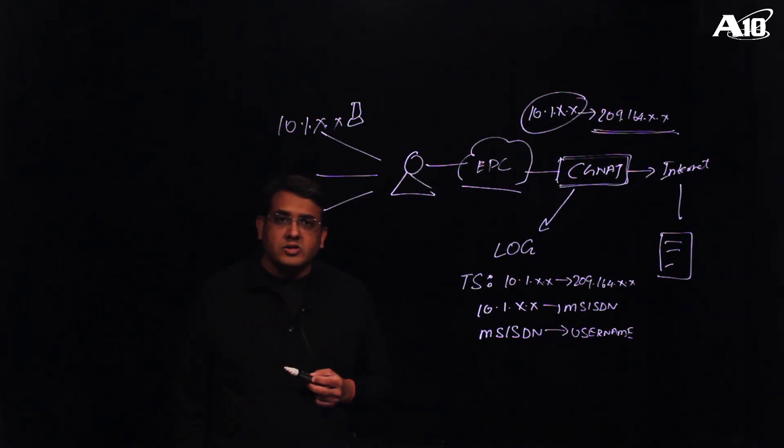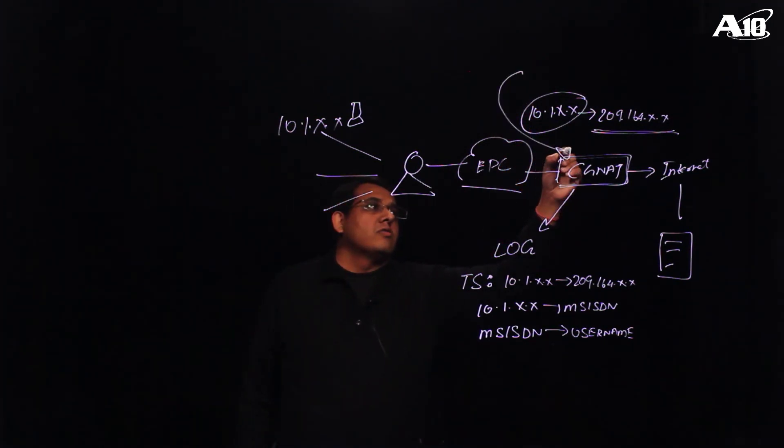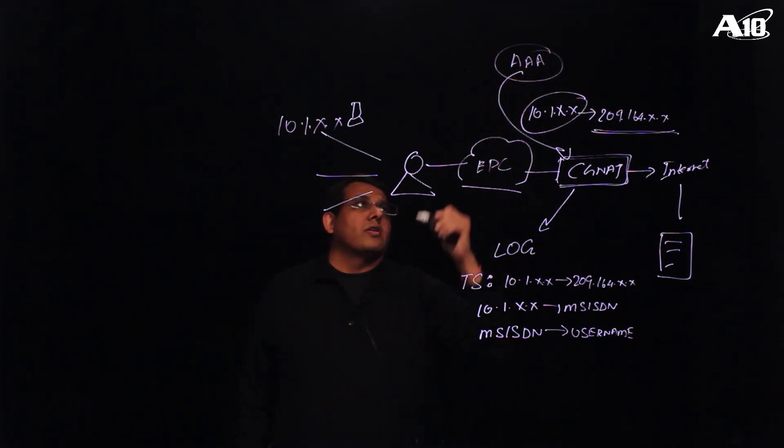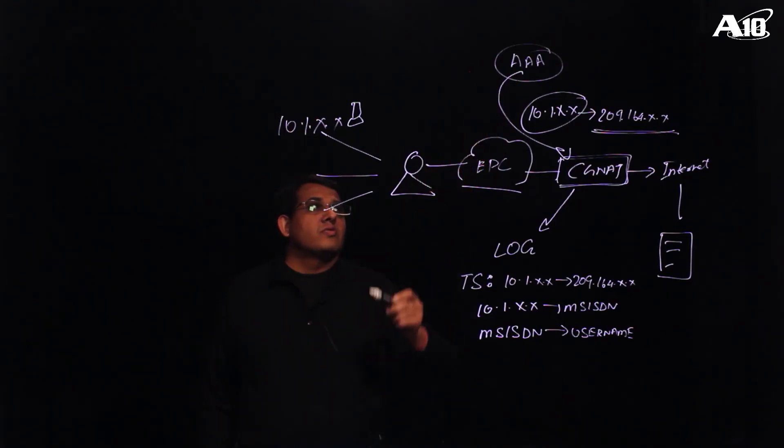So how can A10 help you to solve this problem? Well, we can interact and get a feed from a AAA server or the equivalent of a AAA server in a telco environment. Now where does this AAA server come into the picture? Whenever your mobile subscriber gets onto the network or is roaming from one network to the other, the AAA server will kick in, will authenticate the user and send this information to the CGNAT box.